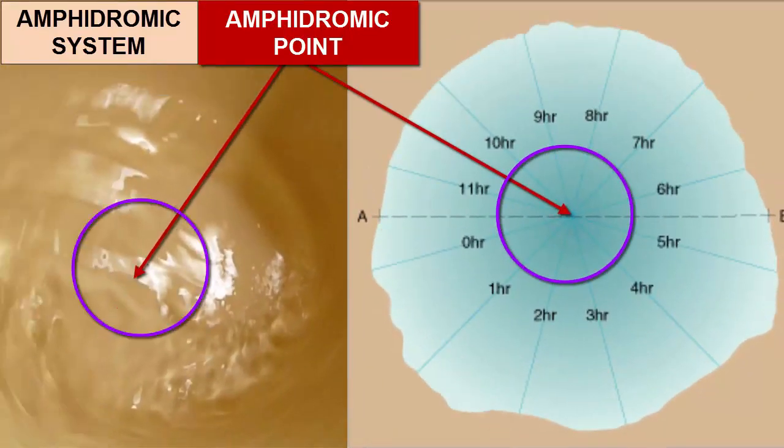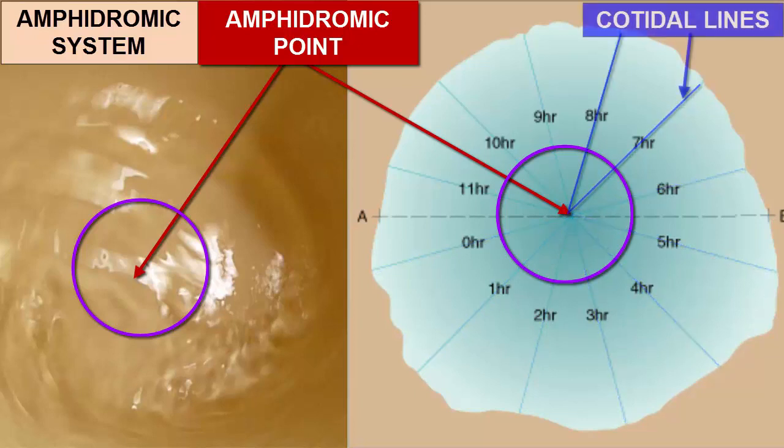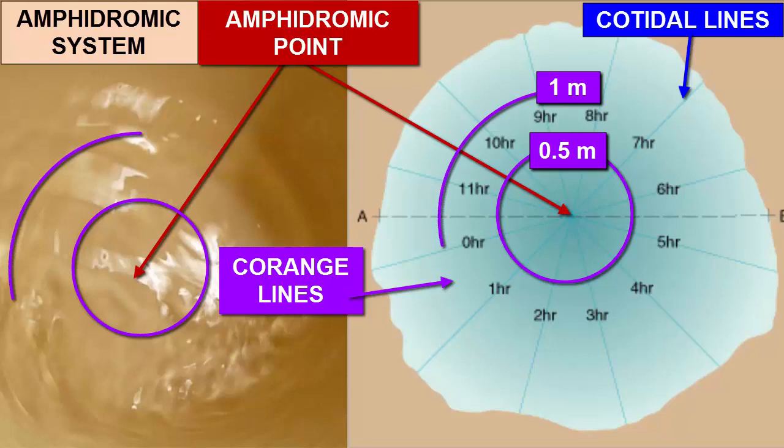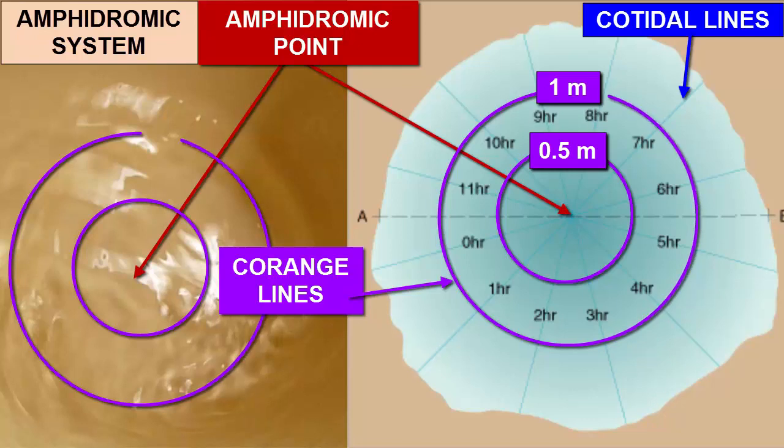In this bird's eye map view, we can further describe the amphidromic system with lines and circles. These lines that look like spokes of a wheel represent the location of the high tide every hour as it moves around the bucket. We call these lines cotidal lines because every location along the line experiences high tide or low tide at the same time. The concentric circles are called co-range lines because everywhere along each circle locations are equidistant from the center of the bucket, the amphidromic point, and therefore they experience the same difference between high tide and low tide or the same tidal range.